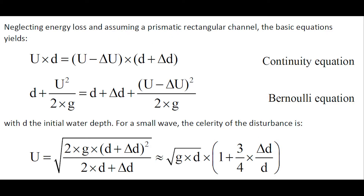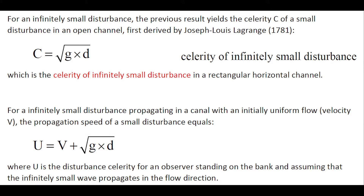Neglecting energy loss and assuming a prismatic rectangular channel, the basic equation yields an expression of the celerity of the disturbance. For an infinitely small disturbance, the result gives the celerity c of a small wave in an open channel, first derived in 1781: c equals the square root of gd, valid for a rectangular horizontal channel.